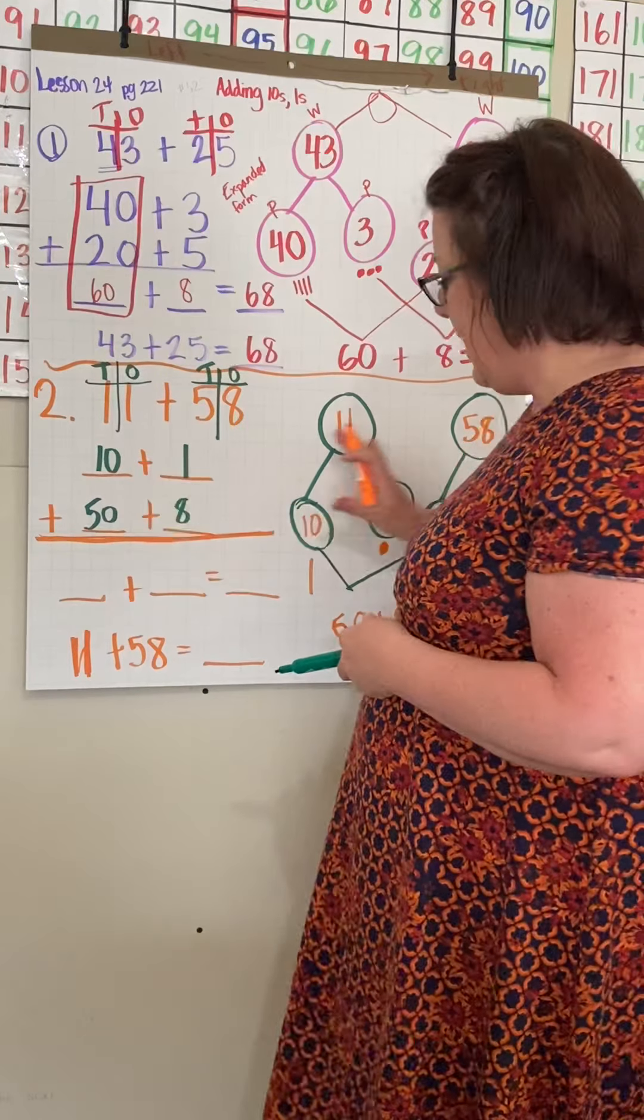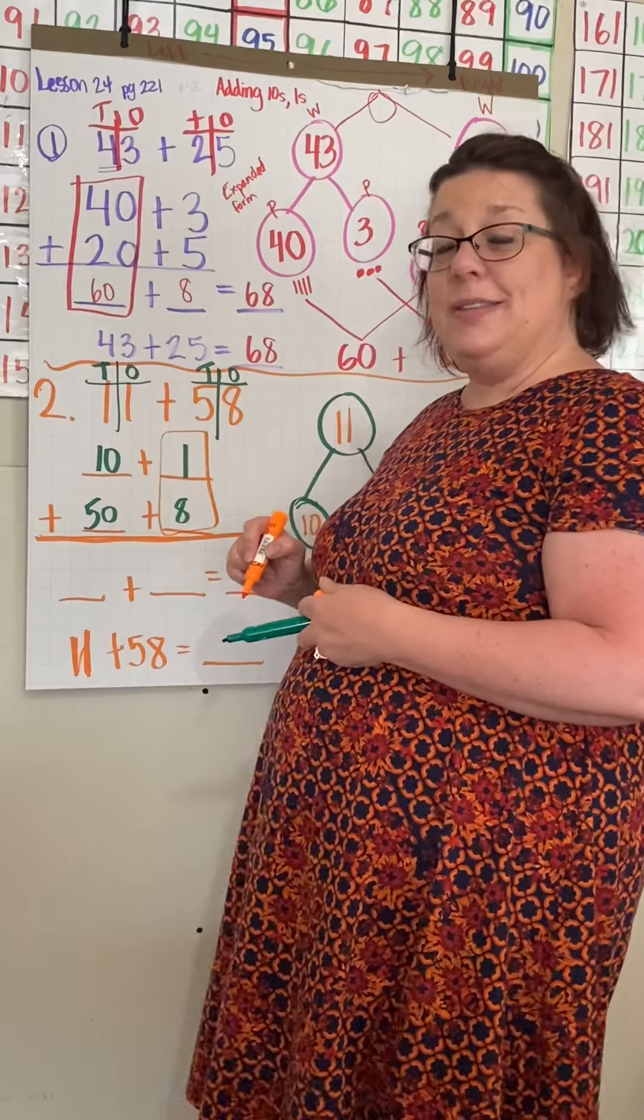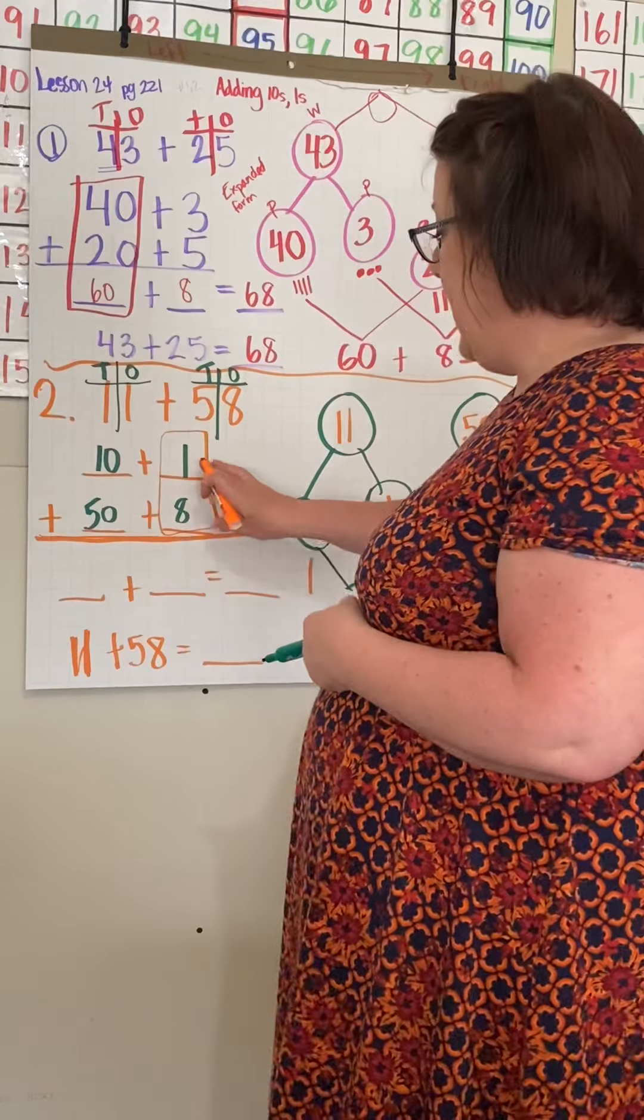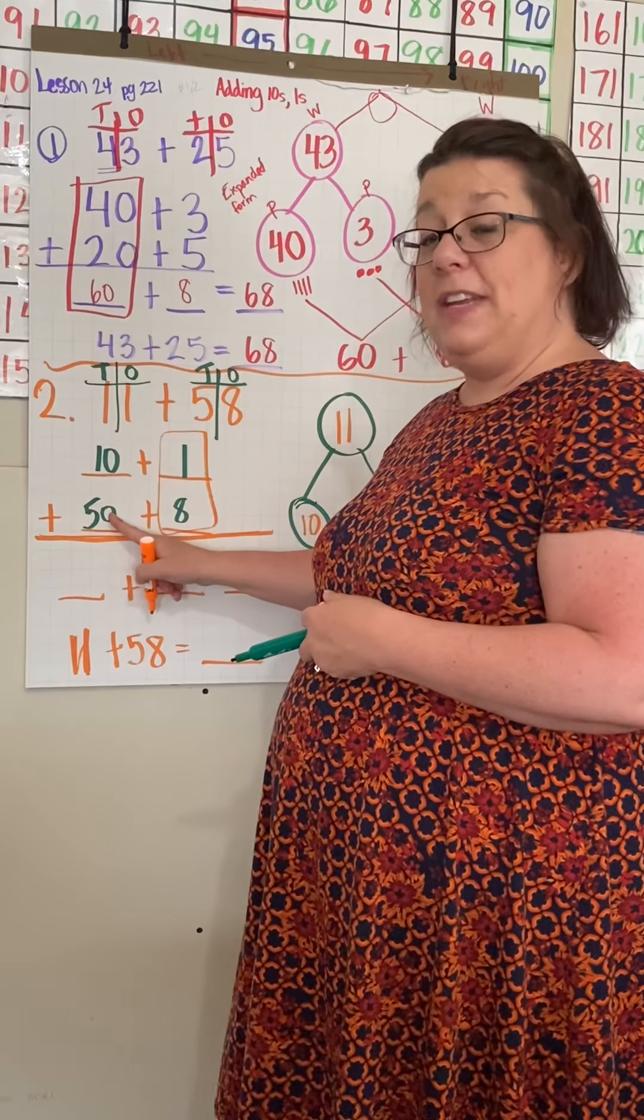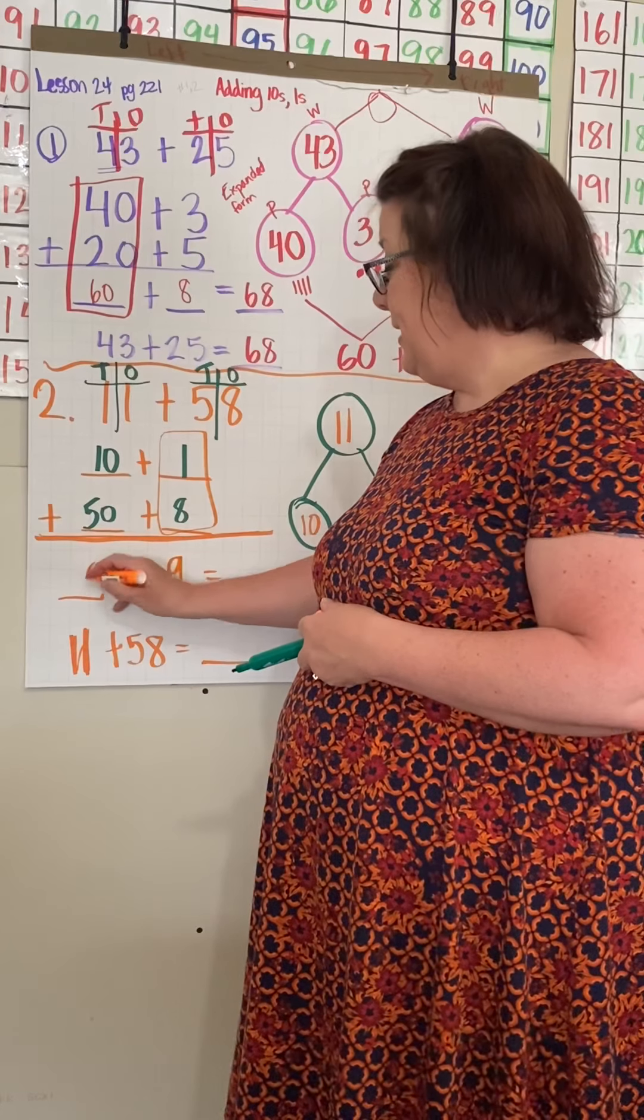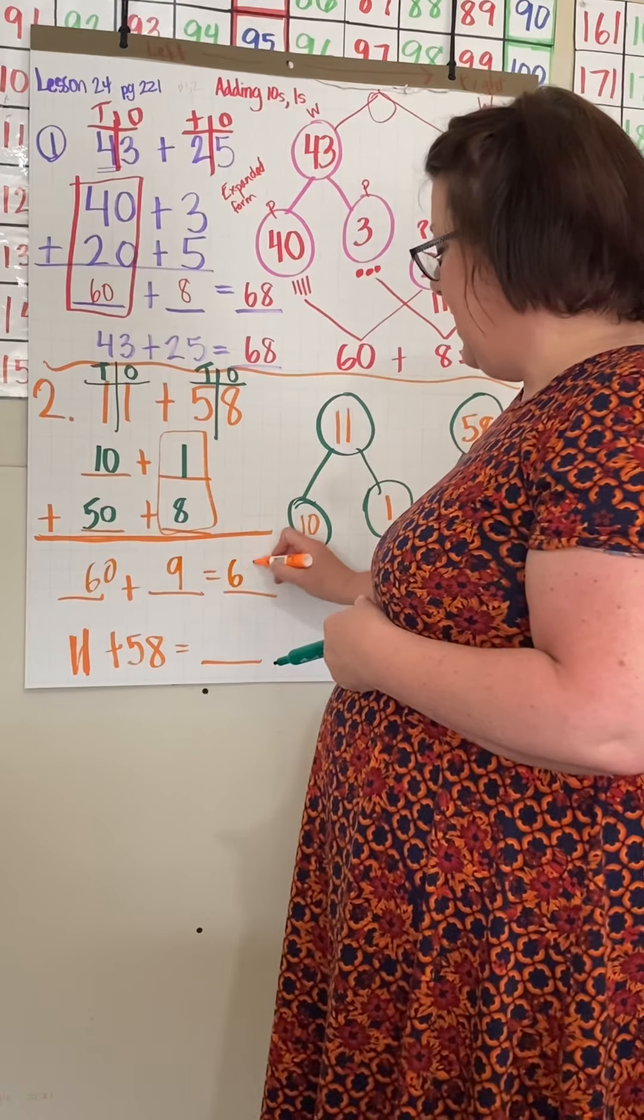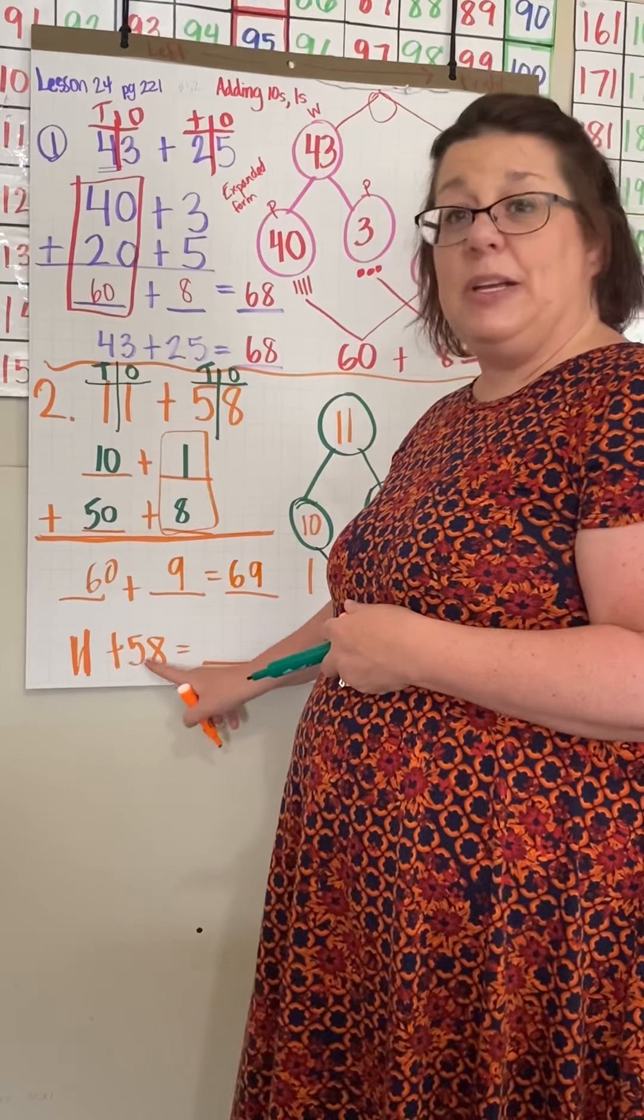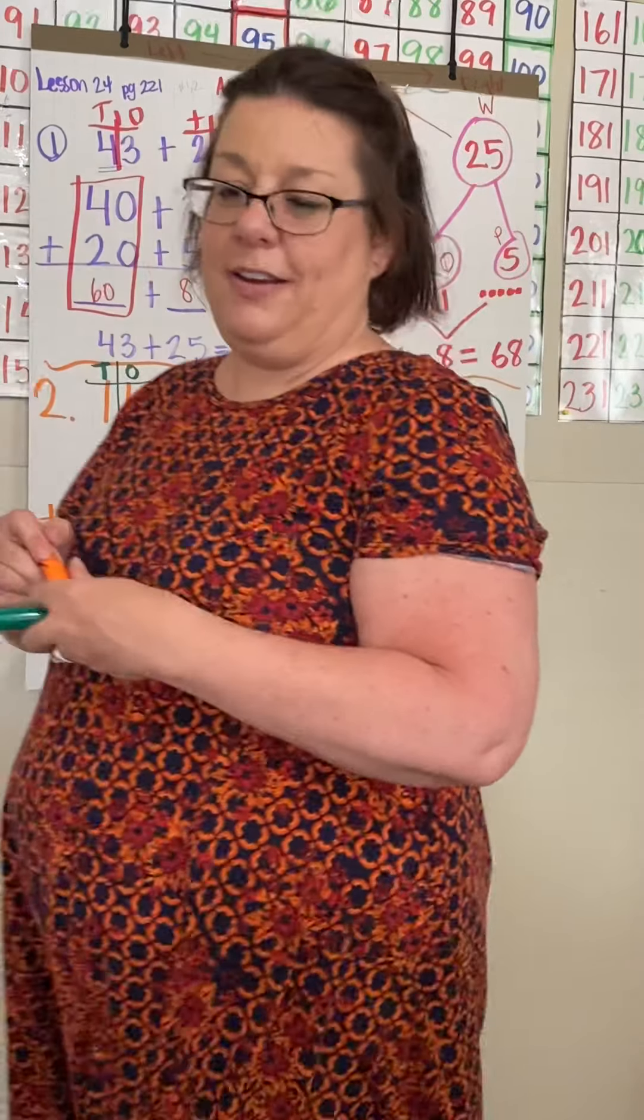Let's see if we get the same answer over here. Let's add our ones. How many ones do we have? One plus eight is nine. 10 plus 50 is 60. 60 plus nine is 69. So 11 plus 58 is 69. Good job.